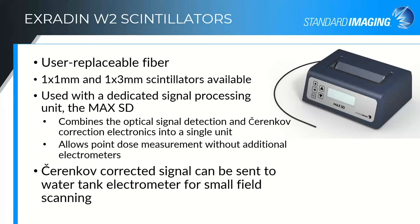With the W-2, we took the next step to make it more easily used in a water tank. It has a user-replaceable fiber — you can swap between the 1×1 and 1×3 fibers. The 1×1 gives you the best resolution but the lowest signal level, while the 1×3 gives slightly higher signal to noise, making your setup a little easier. There's also the tie to all of the publications on the W-1, which used the 1×3 millimeter scintillator.